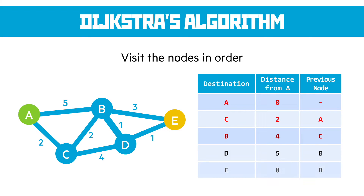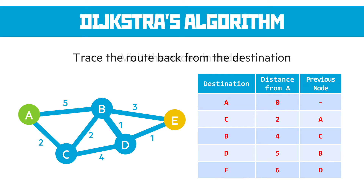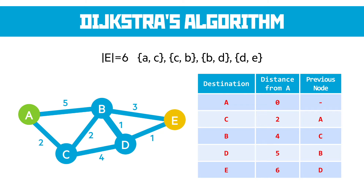From B, going back to C or A would increase the length. The two vertices we can travel to without going back are E and D. D actually has a distance of 5 from A, which is shorter than previously computed, so we replace that in the table. E is a total distance of 8 away. With B completed, we cross it off and look at E. E has no new vertices to travel to, so we're done. We trace back using the previous node column: the distance to E is 6, going A → C → B → D → E. That's the shortest path.